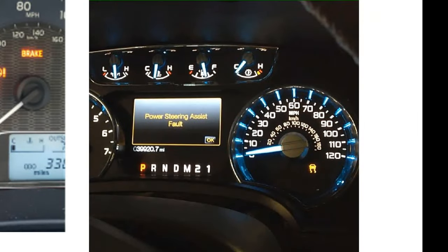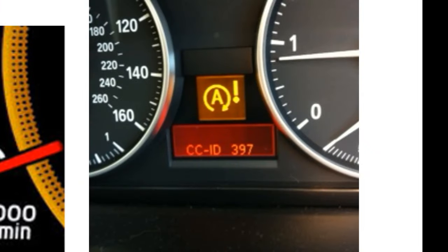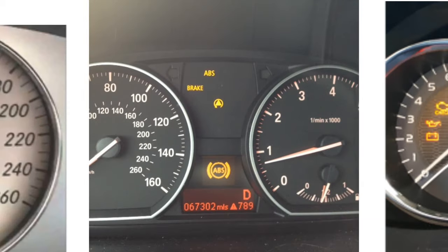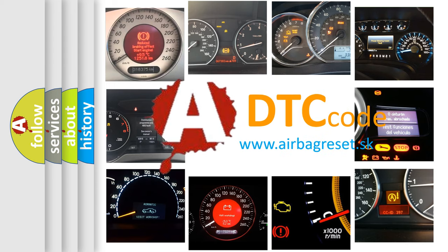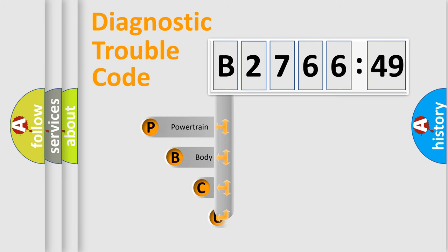Welcome to this video. Are you interested in why your vehicle diagnosis displays B276649? How is the error code interpreted by the vehicle? What does B276649 mean, or how to correct this fault? Today we will find answers to these questions together. Let's do this.